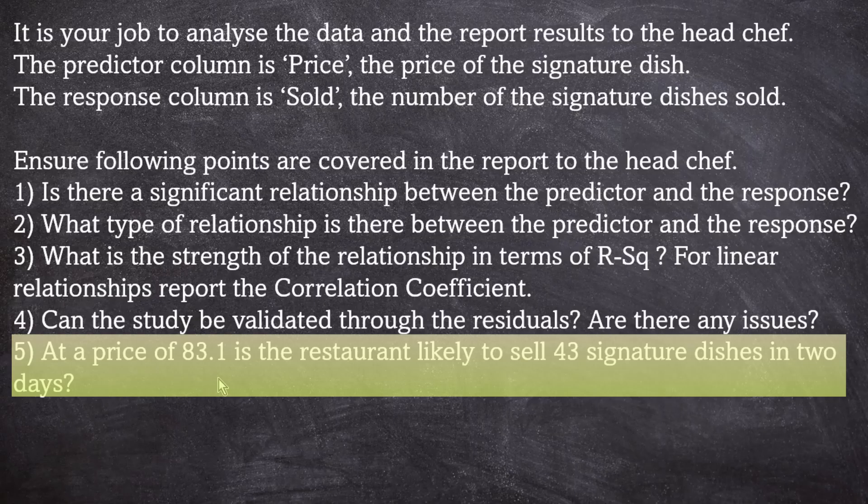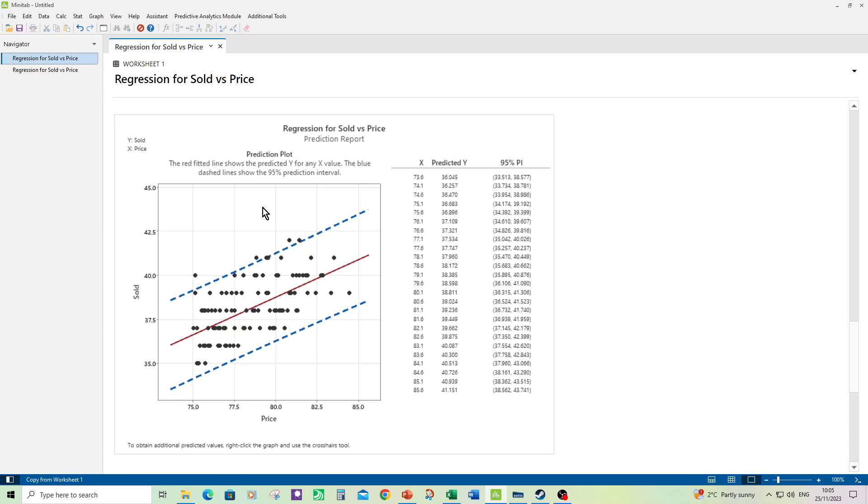Number five. At a price of 83.1 is the restaurant likely to sell 43 signature dishes in two days? Let's have a look at the prediction report for that.